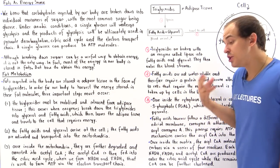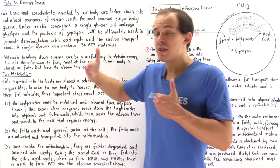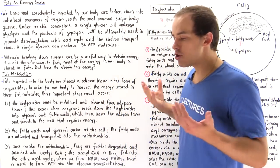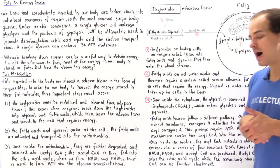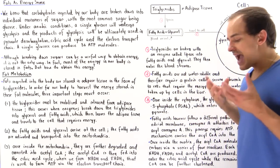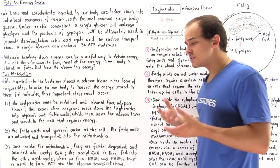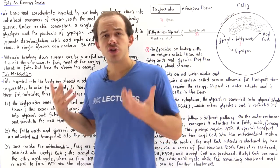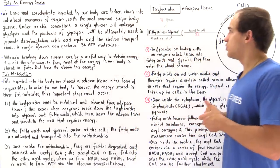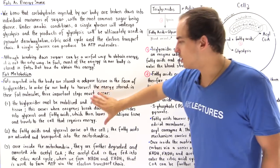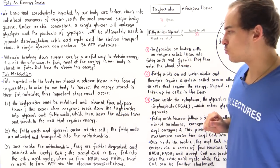How can we use and transform that energy to form ATP molecules used by our body? Basically, triglycerides have to undergo three important stages before we can actually obtain those ATP molecules: stage one, stage two, and stage three. Let's take a look at each one of these stages briefly.